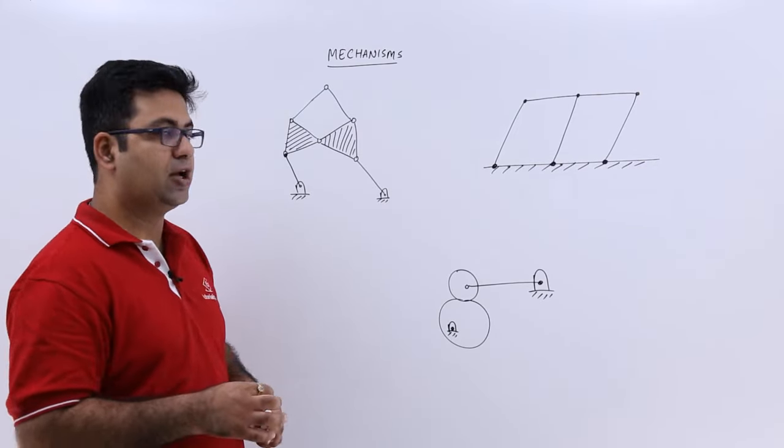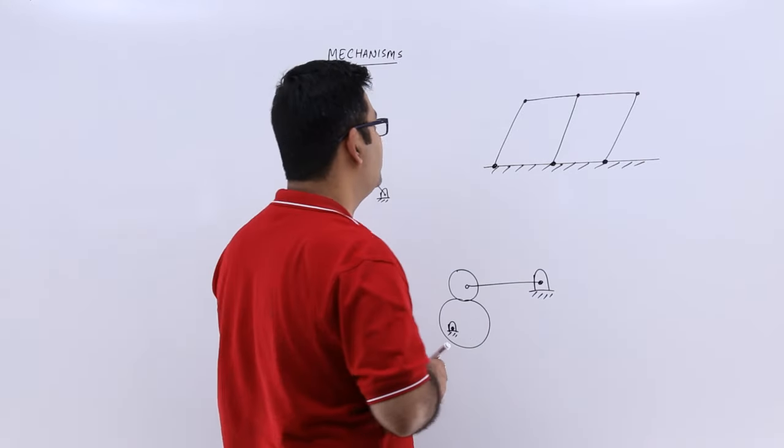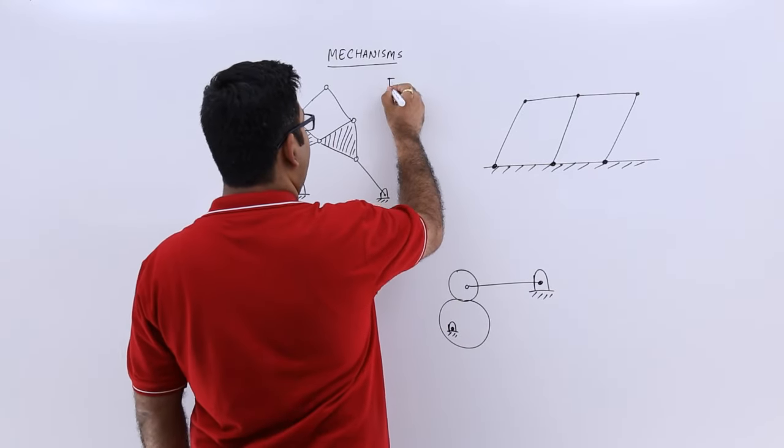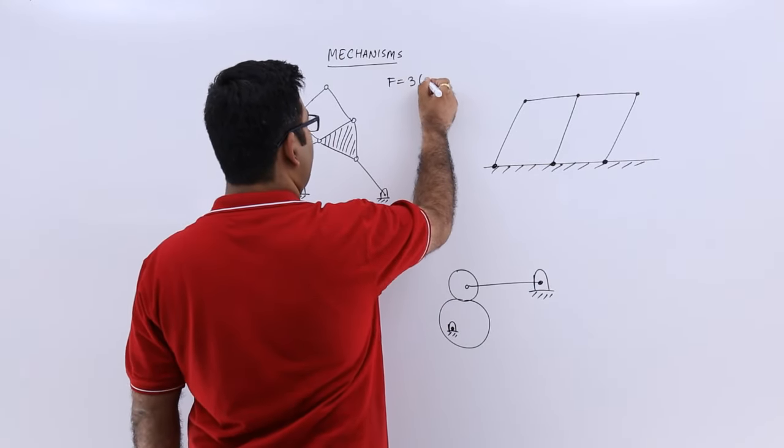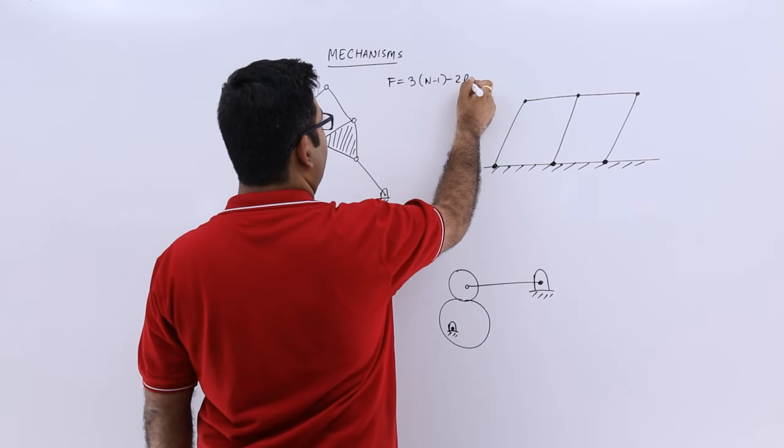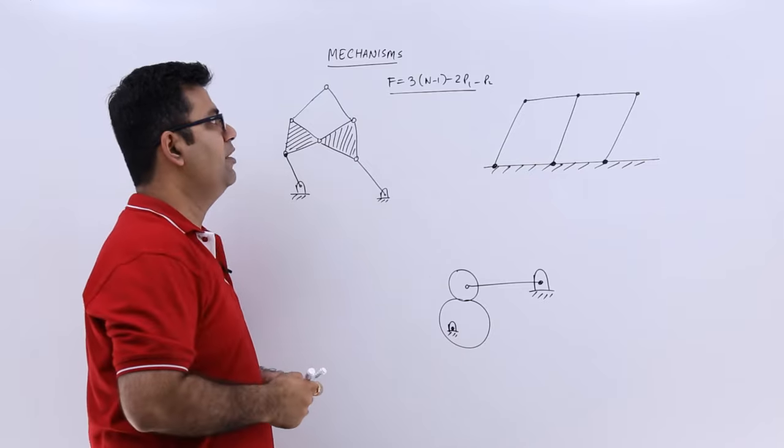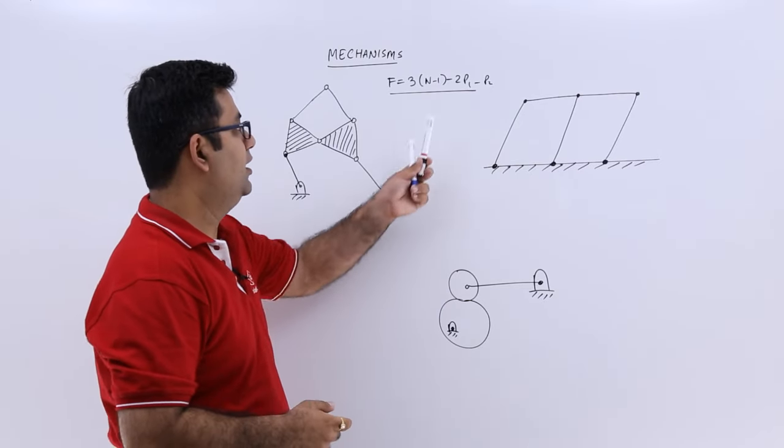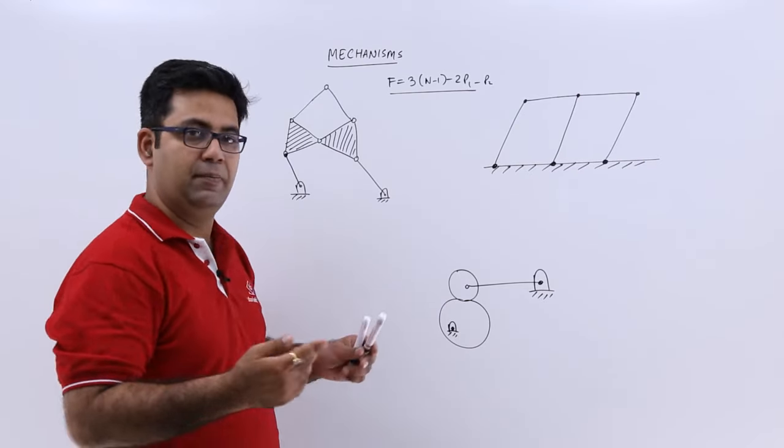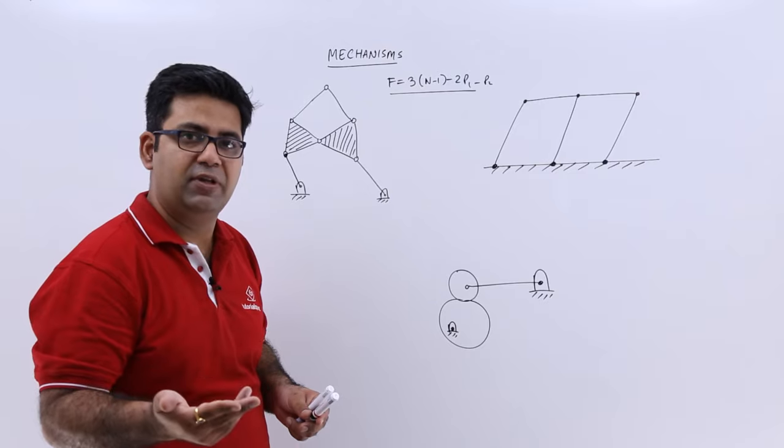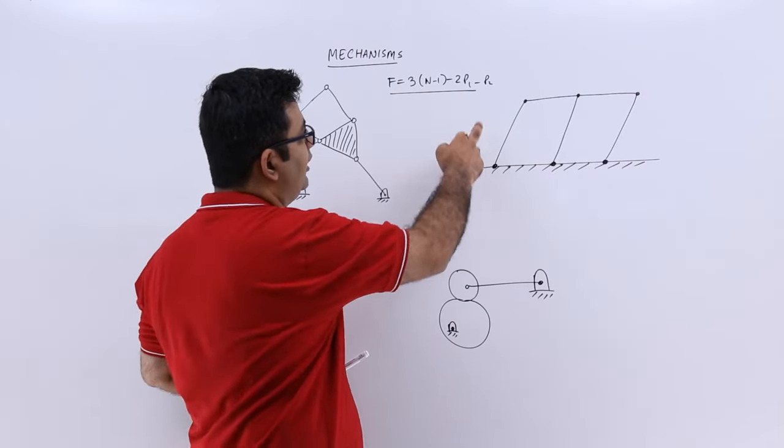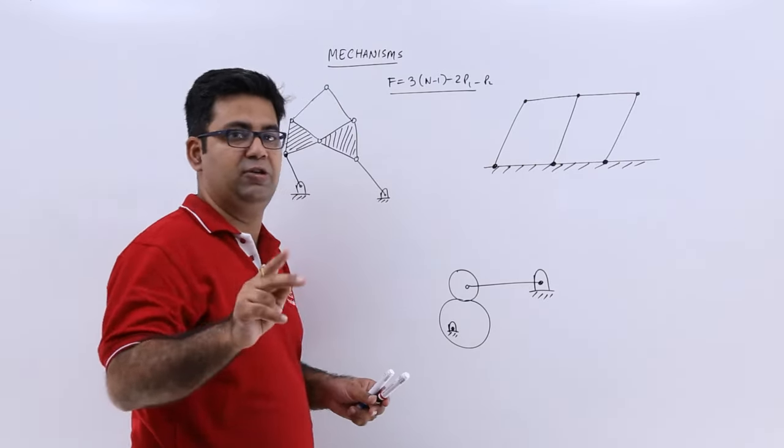So the Kurzbach criterion or the Kurzbach equation is: degrees of freedom equals 3(n-1) minus 2p1 minus p2. Where p1 is the number of lower pairs with one degree of freedom and p2 is the number of higher pairs with two degrees of freedom.